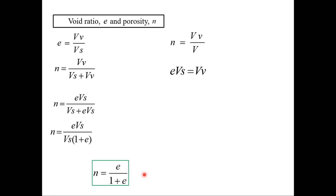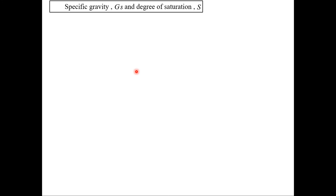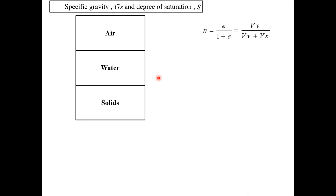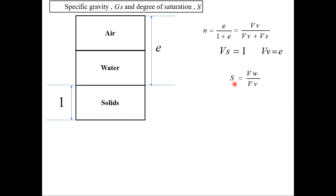The next relation is to relate specific gravity with degree of saturation. Assuming volume of solids equals one, volume of voids equals e. Degree of saturation (S) is expressed as the ratio of volume of water to volume of voids, expressed as a percentage. Since volume of voids equals void ratio e, degree of saturation S equals volume of water divided by e. Hence, volume of water equals S times e.